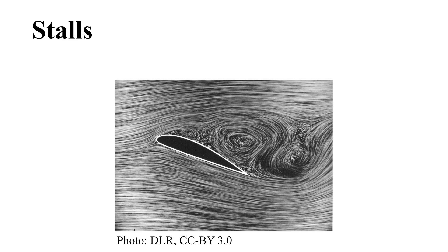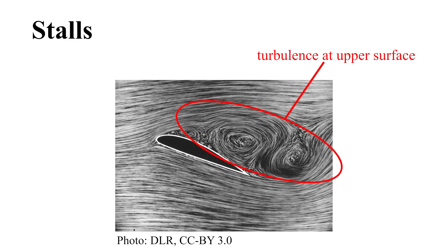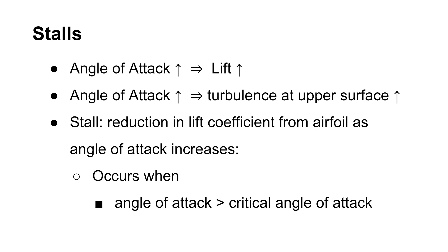If a pilot increases the angle of attack, the air will not flow smoothly over the upper surface of an airfoil. Instead, the air will become turbulent at the trailing edge. If the angle of attack increases further, the turbulence grows even more near the leading edge of an airfoil. There is a certain tipping point in the angle of attack that you should not exceed. If you do, the turbulence at the upper surface will prevail over the lifting force from the lower surface. This situation is called a stall. The stalling aircraft will lose lift, nosedive and start falling uncontrollably. The angle of attack at which a stall happens is the critical angle of attack.